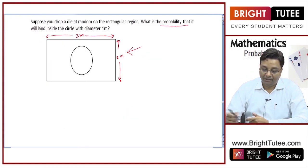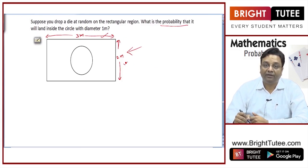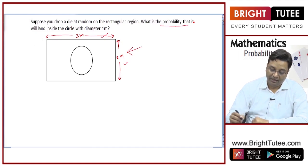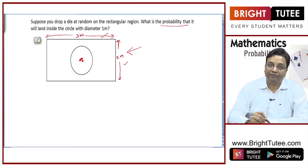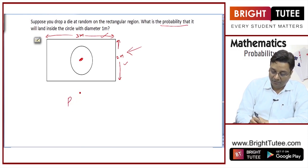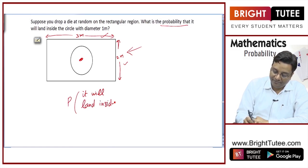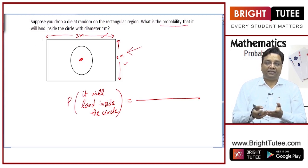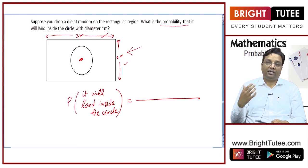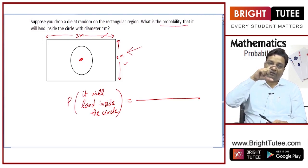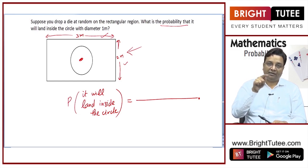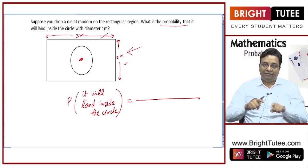Now suppose you drop a die at random on this rectangle, which has got dimensions 3 meters and 2 meters. What is the probability that it will land inside the circle with a diameter of 1 meter? So when you throw a die and it needs to fall in this circle, we need the probability of that. We cannot count number of favorable cases or total cases here, so we look at the area which is favorable to us — that area is the circular region — and the total area is the area of this rectangle.